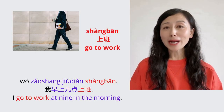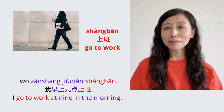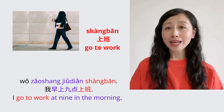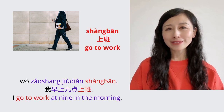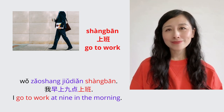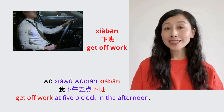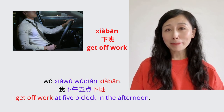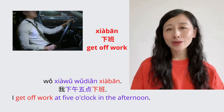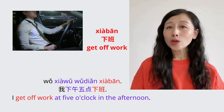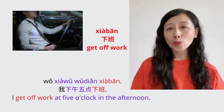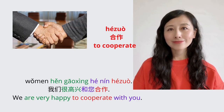Go to work: 上班. Example sentence: I go to work at 9 in the morning. 我早上9点上班. Get off work: 下班. Example sentence: I get off work at 5 o'clock in the afternoon. 我下午五点下班。